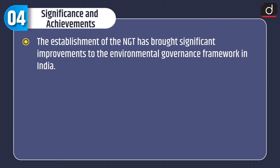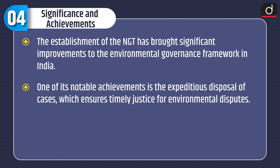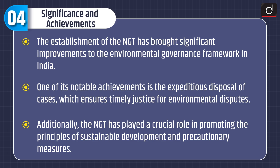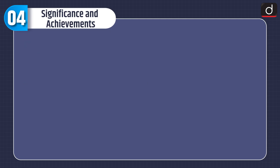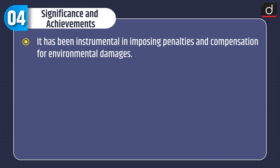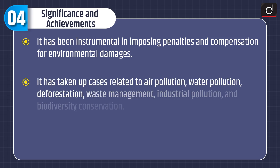Now let's have a look at its significance and achievements. The establishment of the NGT has brought significant improvements to the environmental governance framework in India. One of its notable achievements is the expeditious disposal of cases, which ensures timely justice for environmental disputes. Additionally, the NGT has played a crucial role in promoting the principles of sustainable development and precautionary measures. It has been instrumental in imposing penalties and compensation for environmental damages. It has taken up cases related to air pollution, water pollution, deforestation, waste management, industrial pollution and biodiversity conservation.